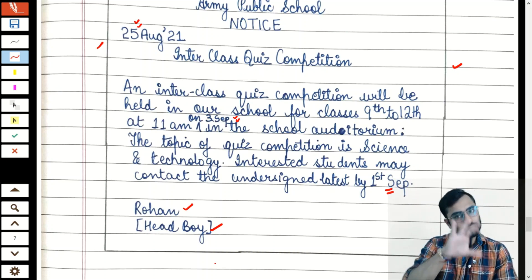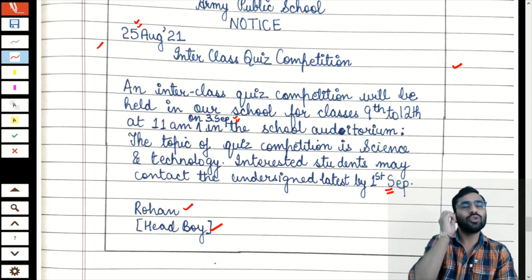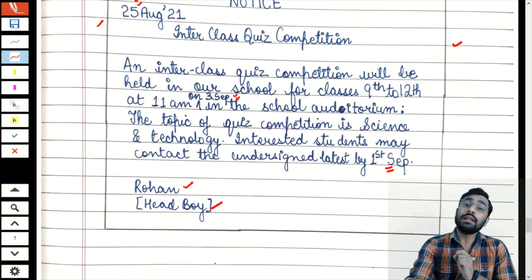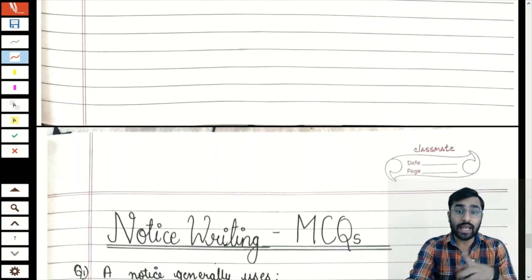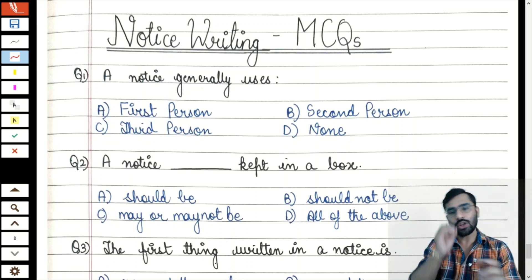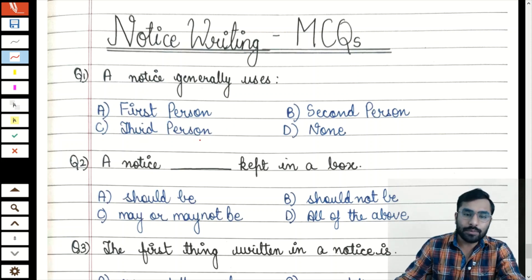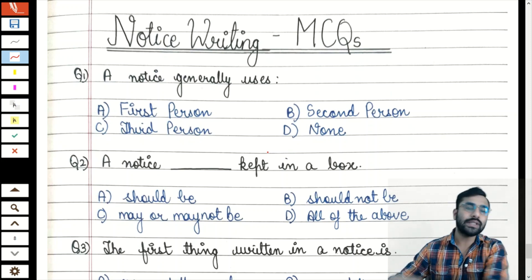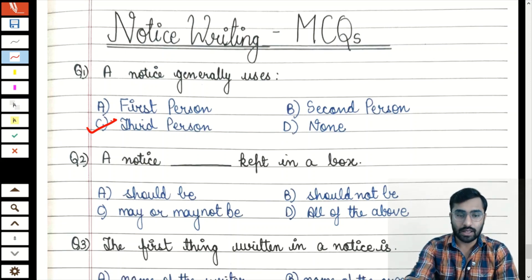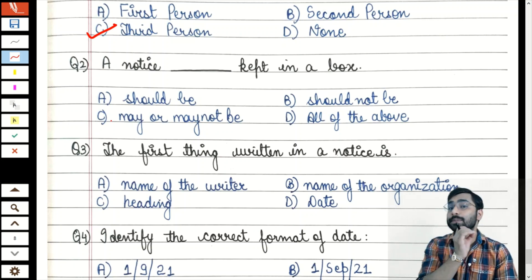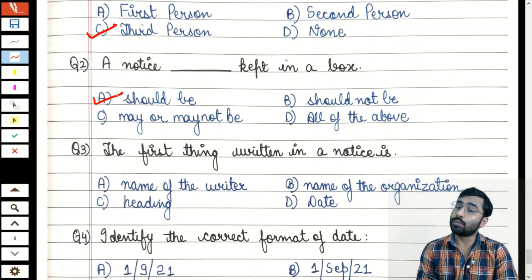Now let's practice some MCQs for term 1. First question: A notice generally uses — first person, second person, third person, or none? As discussed, notice never uses first or second person — we always use third person. So the answer is third person. Second question: The notice should be kept in a box — should be, should not be, may or may not be? This was our first rule — a notice is always written inside a box. So the answer is 'should be.'